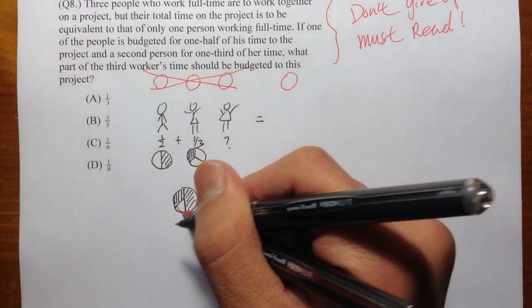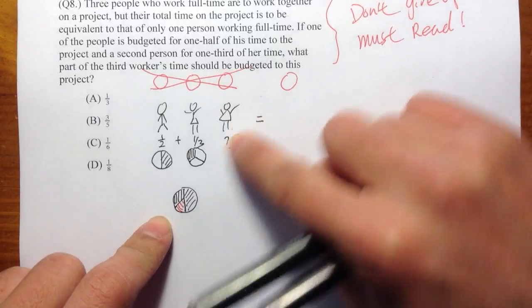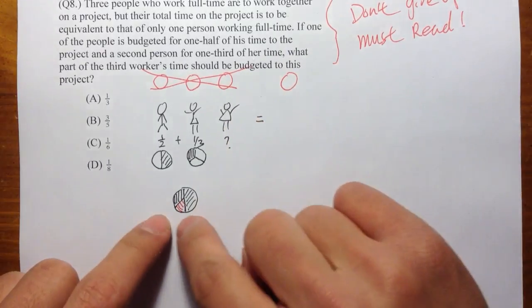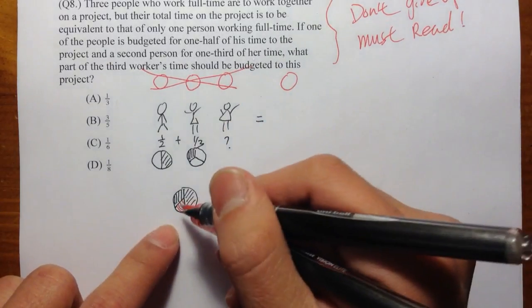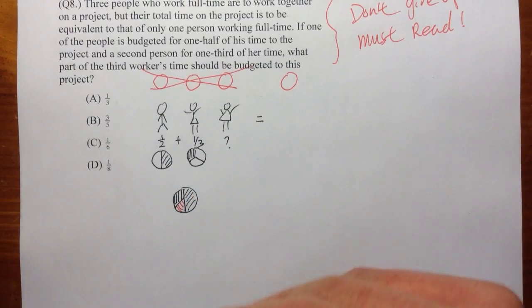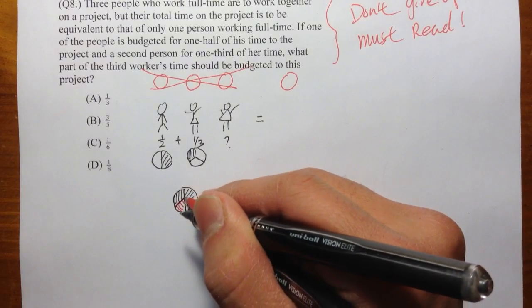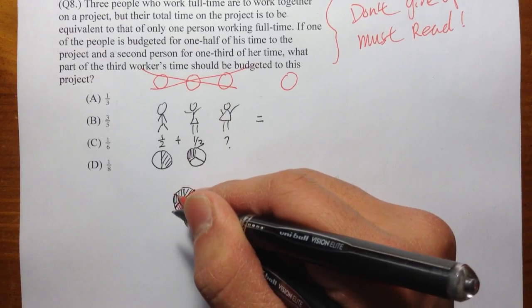This much will be for this person. Right? This much is going to be for this person. And how big is that? Well, let me just kind of continue to draw, kind of cut the pizza. If you extend this line here, and then if you cut it like this.